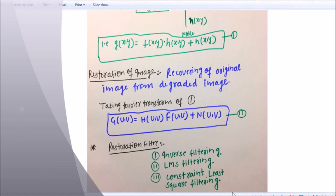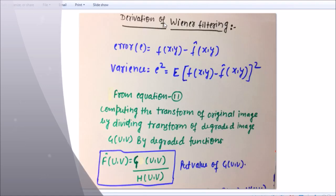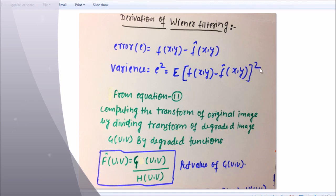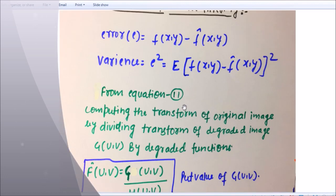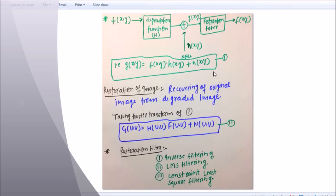Now I'm going to derive the Wiener filtering equation. The error e is equal to f(x,y) minus f-cap(x,y), where f-cap(x,y) is the restored image. The variance is equal to E[ (f(x,y) − f-cap(x,y))² ]. From equation 2 — which is the Fourier transform of the degradation model — we compute the transform of the original image.